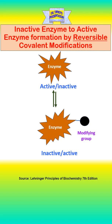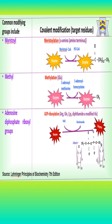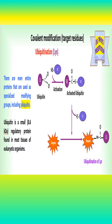Over 500 different types of covalent modifications have been found in proteins. Covalent modifications can change the chemical properties of the site. Common modifying groups are phosphoryl, adenylyl, acetyl, myristyl, methyl, adenosine diphosphoribosyl groups, and ubiquitin.